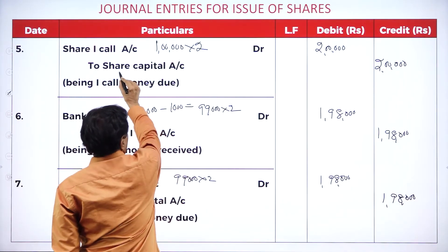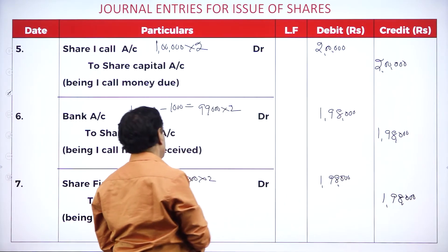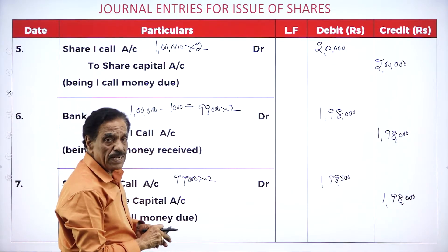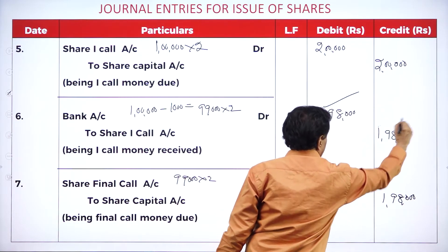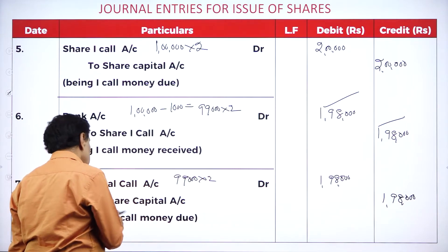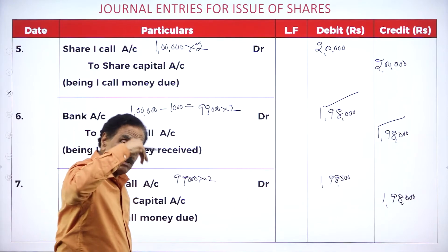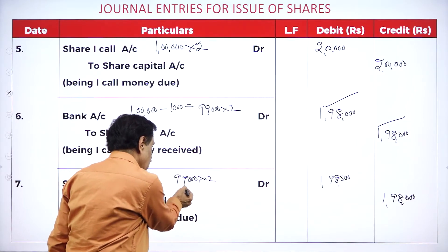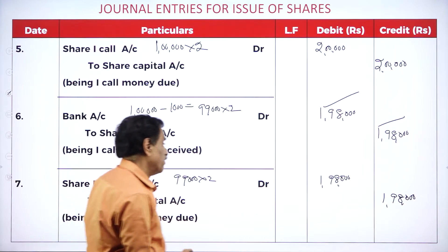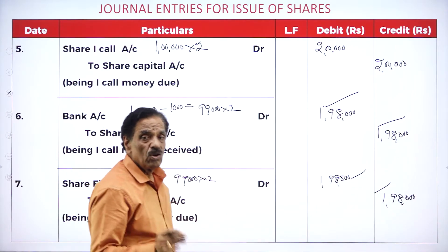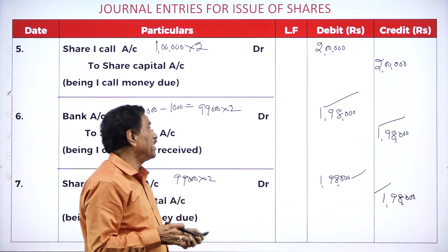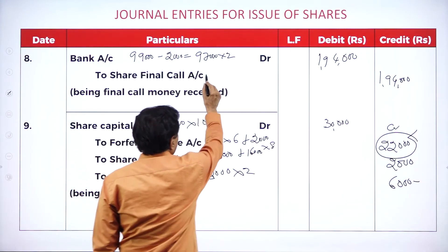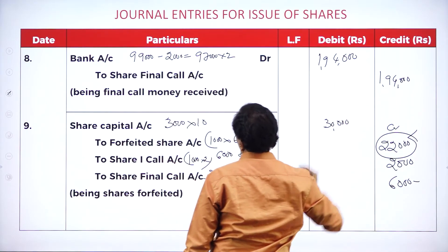Due entry for first call: share first call account debit to share capital account. First man holds 1,000 shares and fails to pay first call — 1 lakh minus 1,000 = 99,000 shares we are going to receive, 99,000 into 2 = 1 lakh 98,000. Then share final call account: 1,000 shares were forfeited in first call only, no chance given in final call. Share final call account debit — call for 99,000 shares — 1,98,000 to receive. Second man holds 2,000 shares, fails to pay final call — out of 99,000, receive 97,000 shares, 97,000 into 2 = 1 lakh 94,000.